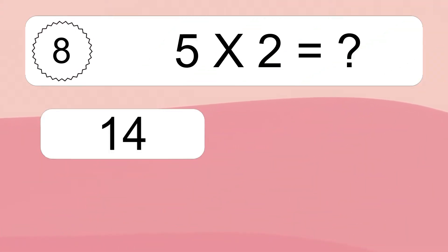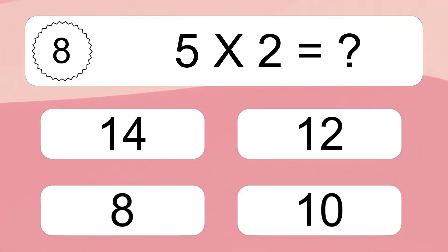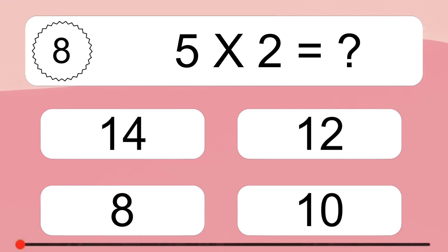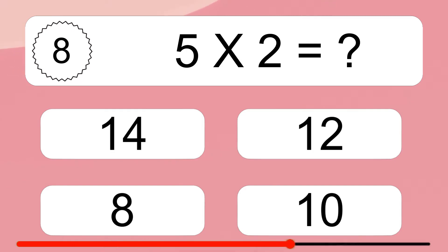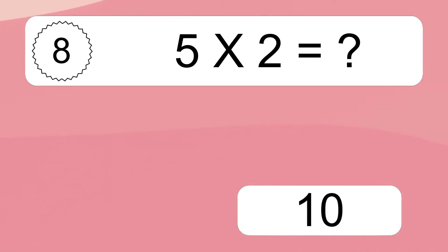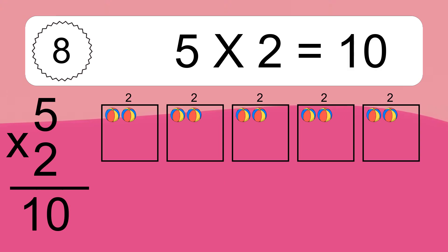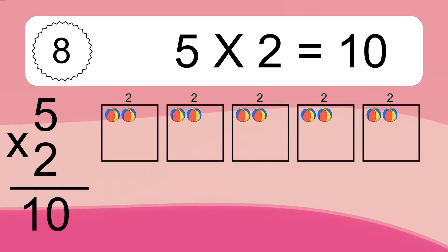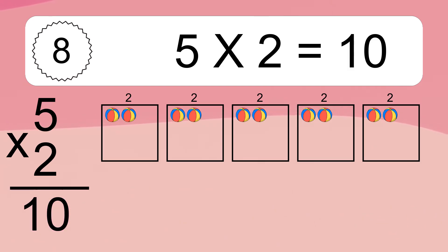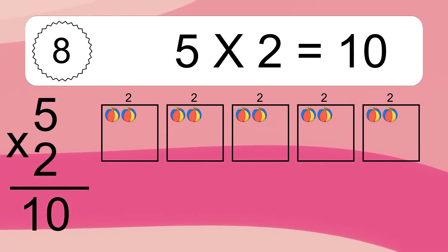5 times 2 equals what? 5 times 2 equals 10. We have 5 boxes, and each box has 2 colorful balls inside. If you count all the balls in all the boxes together, you will have 5 times 2 balls. This equals 10 balls.